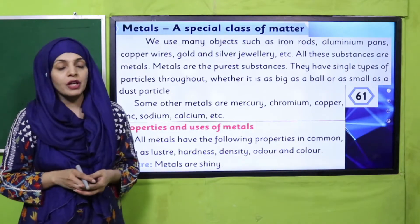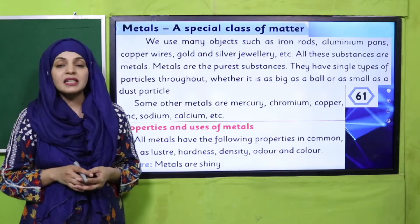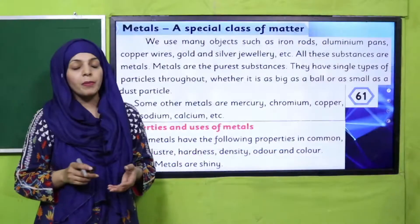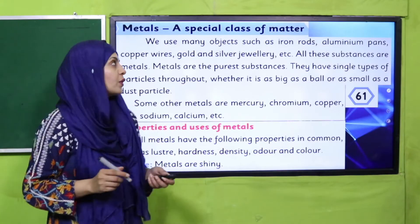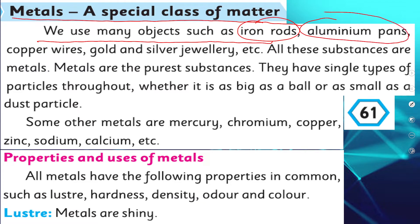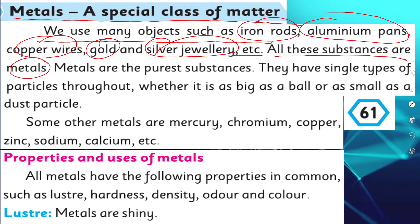Now let's start the reading. Open page number 61 in your Science 4 books. 'Metals — a special class of matter. We use many objects such as iron rods, aluminium pans, copper wires, gold and silver jewelry, etc. All these substances are metals. Metals are the purest substances; they have single types of particles throughout.'